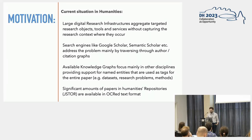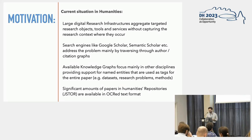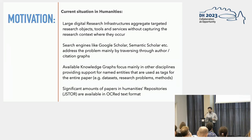Of course we can use search engines like Google Scholar or Semantic Scholar, but these engines address the problem mainly by traversing through author or citation graphs, so they deal with papers as a whole and don't delve inside the information encoded in the main text of the paper. There are other research knowledge graphs out there, but they focus mainly in other disciplines such as medicine, biology, and computer science, and the way they do it is they extract named entities from the text or the abstract of the papers and then associate those entities with the entire paper itself.